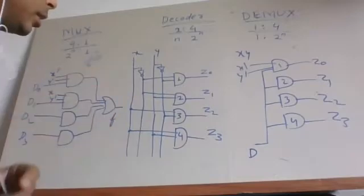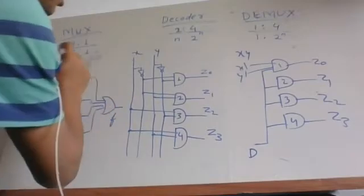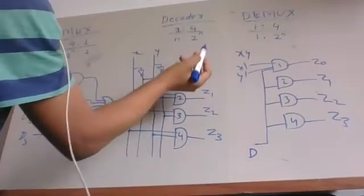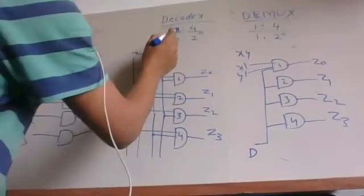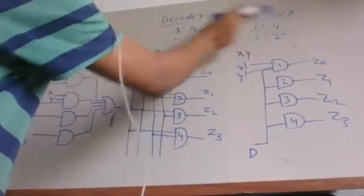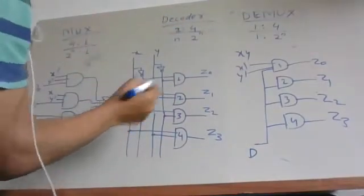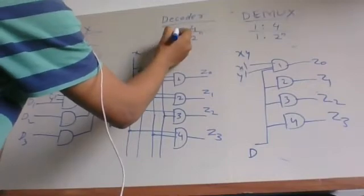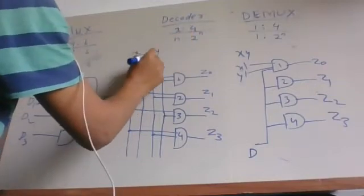In this video, I'm going to explain the demultiplexer and how to generate D-mux and mux using a decoder. For a 2-to-4 decoder, we need two inputs.